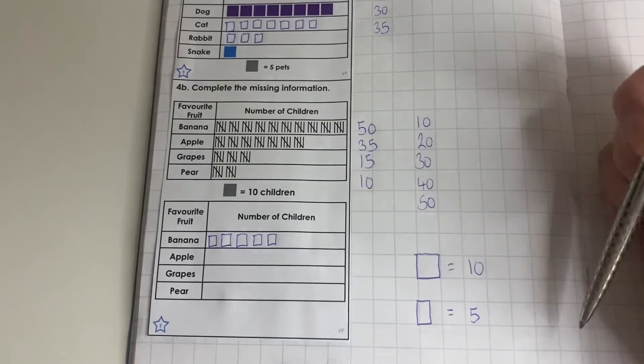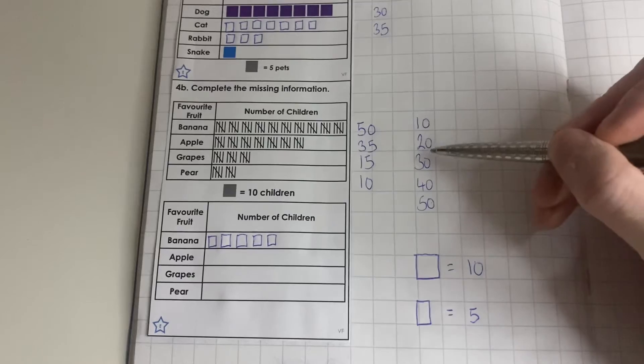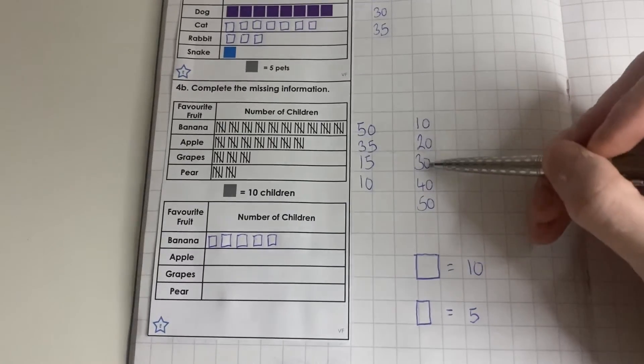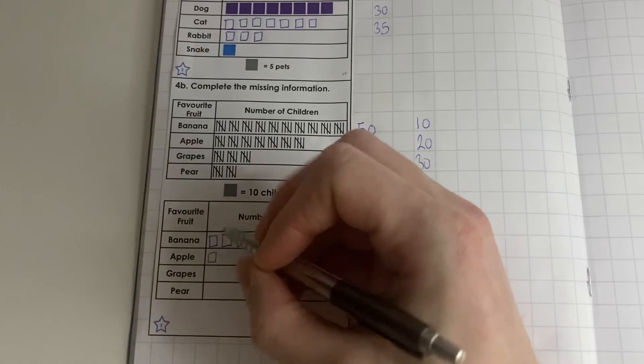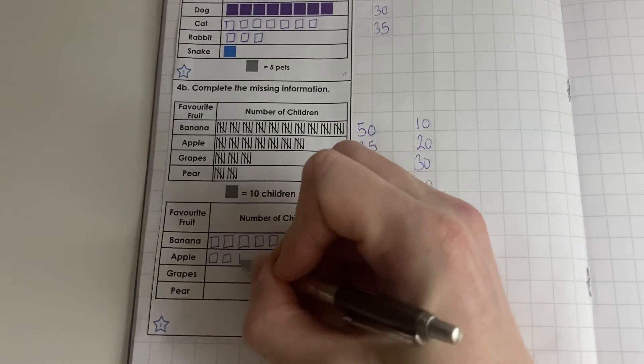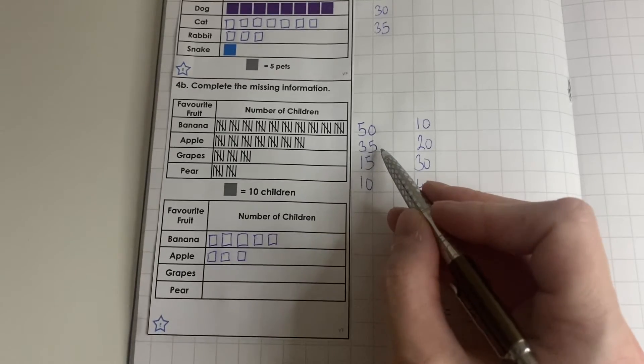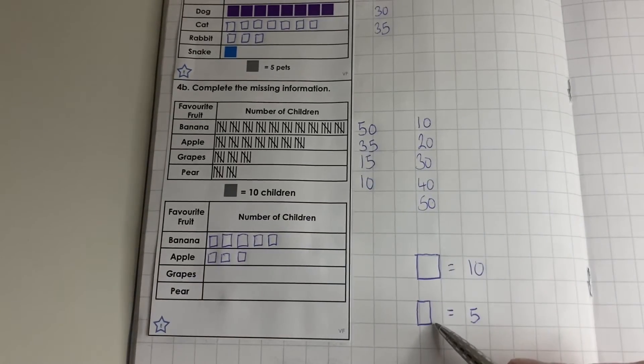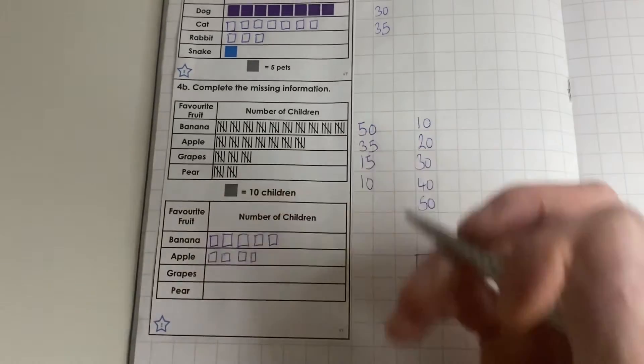We've got 10, 20, 30, that's 3 whole squares. So we'll put these in now: 1, 2, 3. Now we see that's 30 and we need to get to 35, so we need to add 5. We're going to draw half a square which is basically a rectangle.